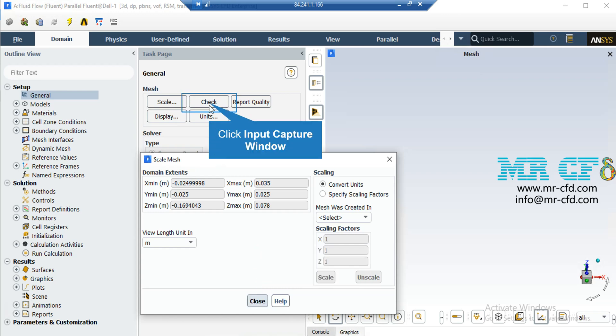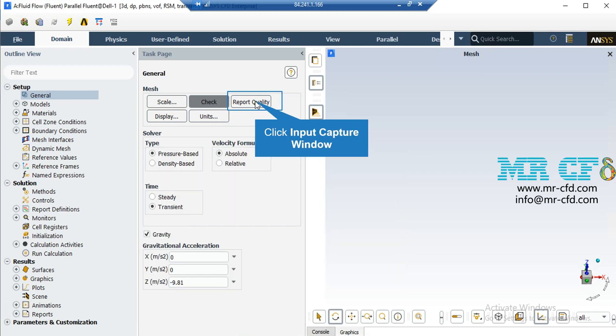By clicking on the check button, you will see that under the console tab, the Fluent software will start to check your mesh for any errors. Also, by clicking on report quality, again in the console tab, the Fluent software will give you the quality report for your mesh.